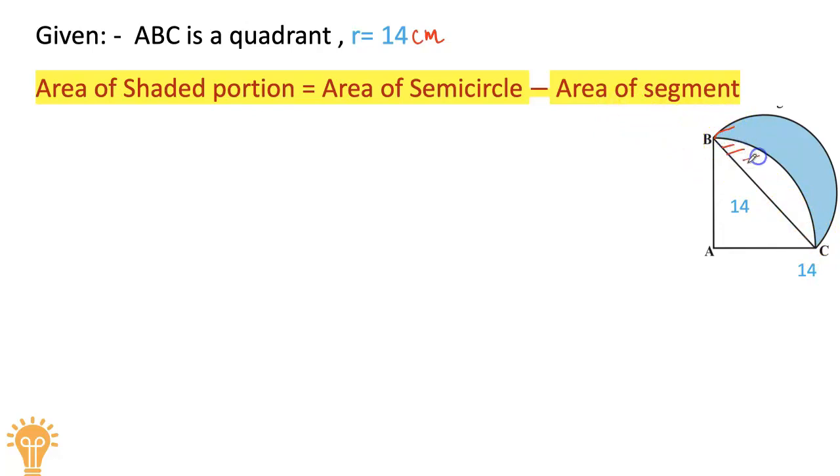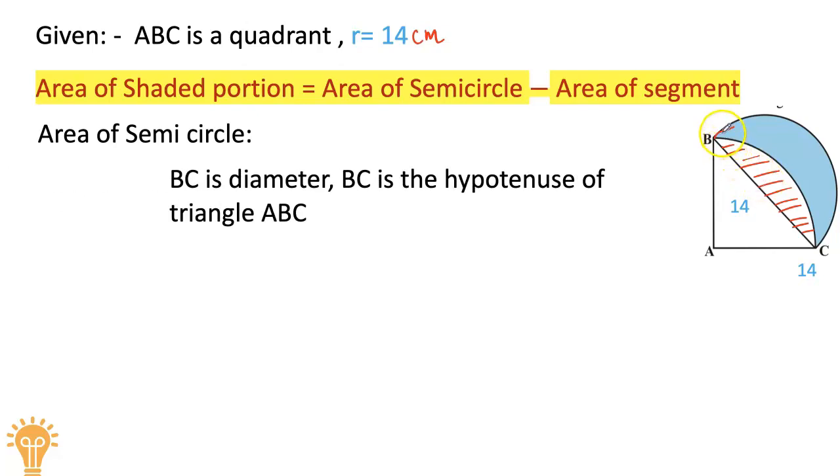So we will get the area of the shaded portion. First, we'll find the area of the semicircle. We need the radius of the semicircle, but it's not directly given.